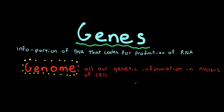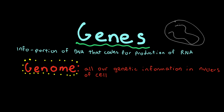Now we're going to talk about genes — not the ones you're wearing, but the ones related to biology. Genes are the information portion of DNA that codes for the production of RNA and encodes for our proteins. Those proteins make our cells, our tissues, and the organs that help us survive. A gene is just a long strand of DNA that codes for a specific protein. It can also code for other proteins, which we'll talk about later.